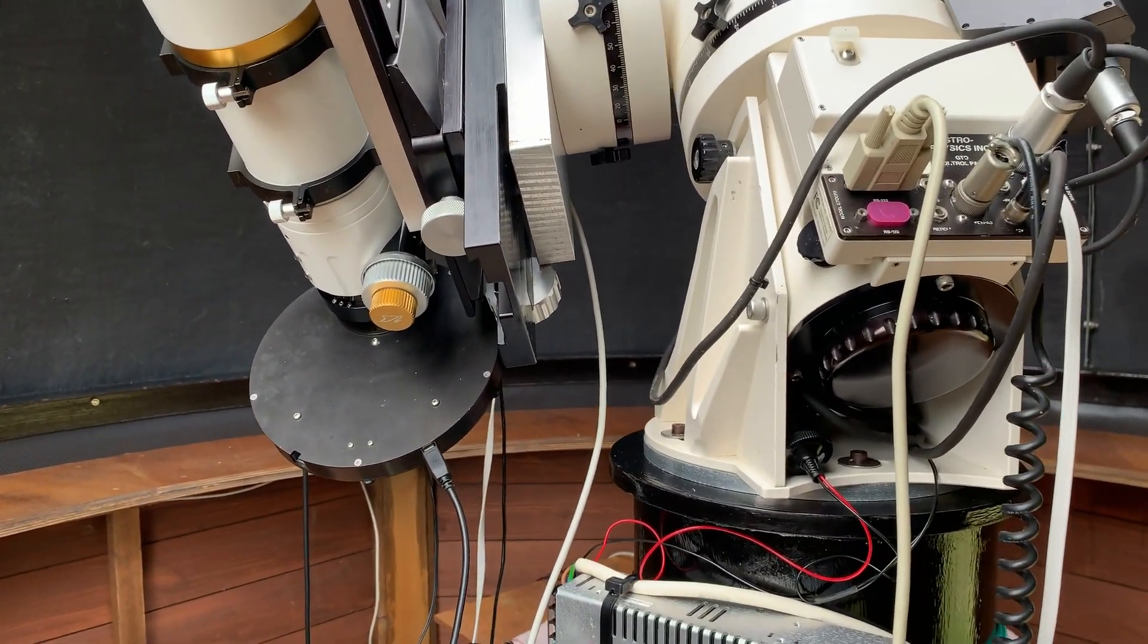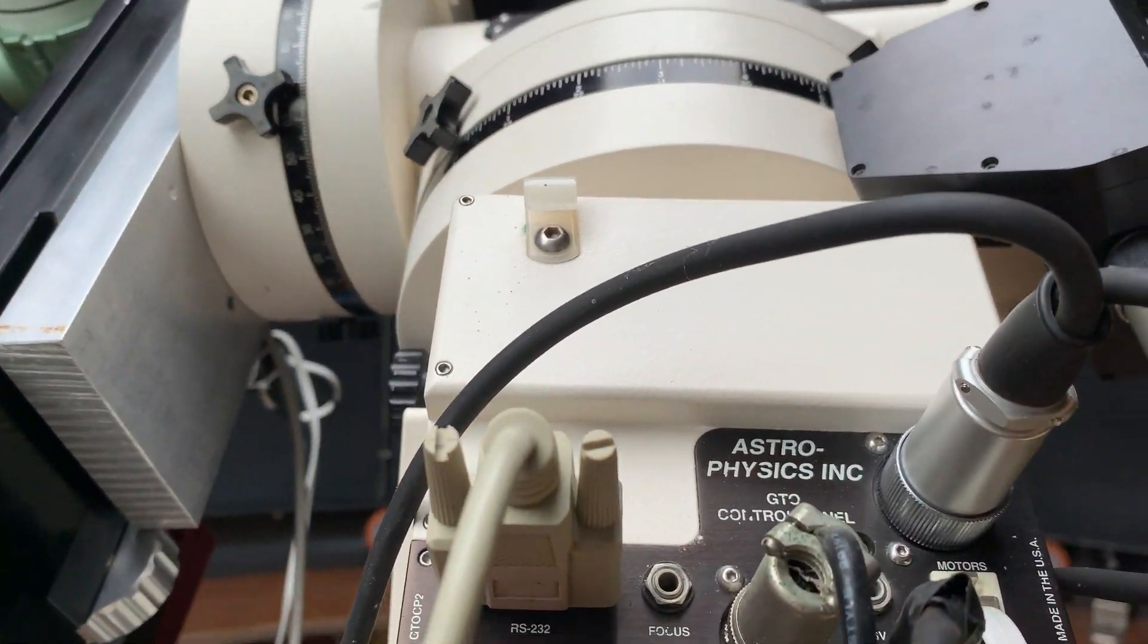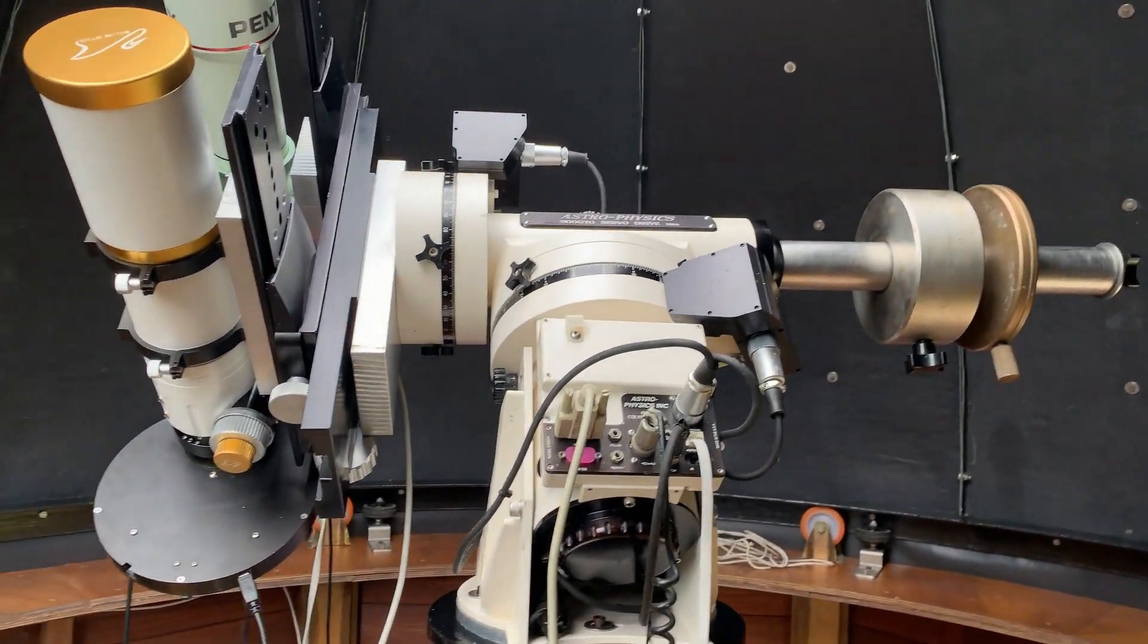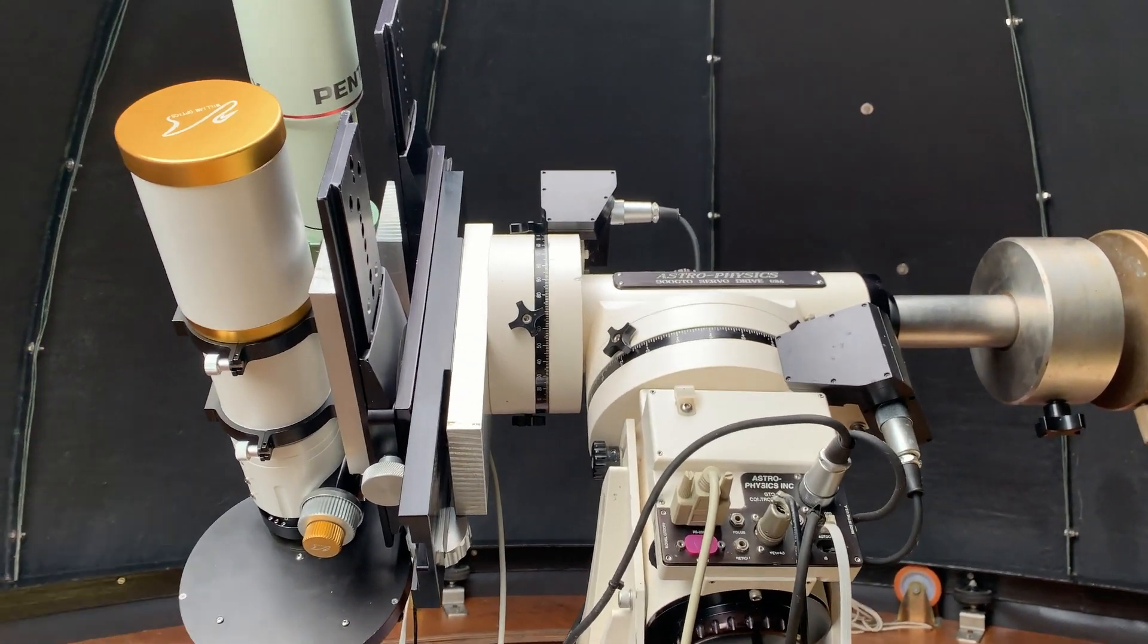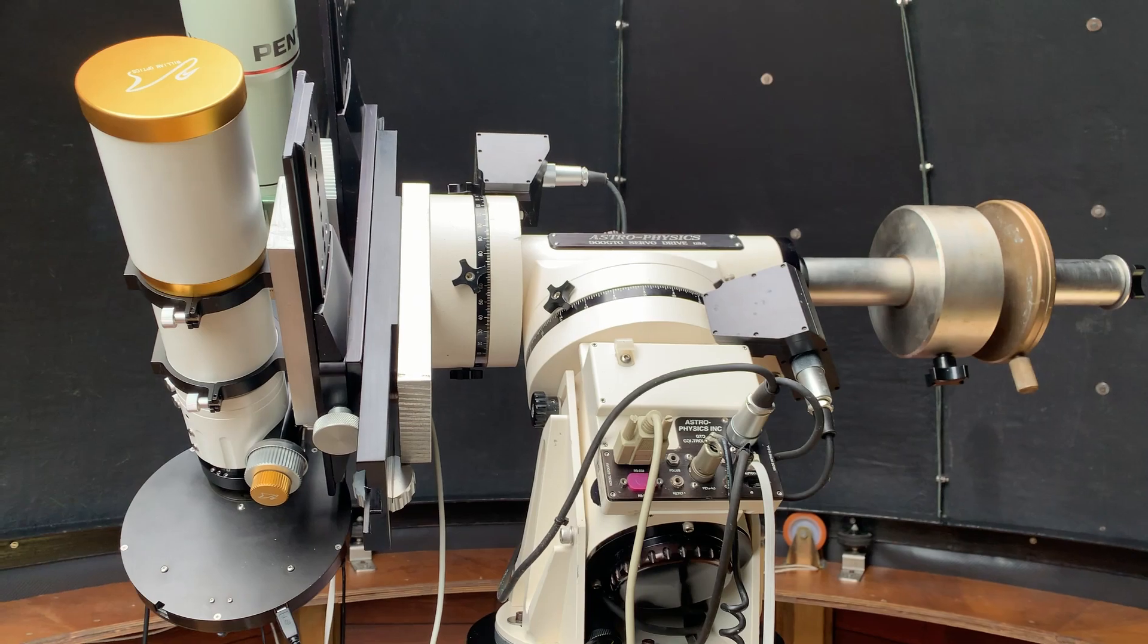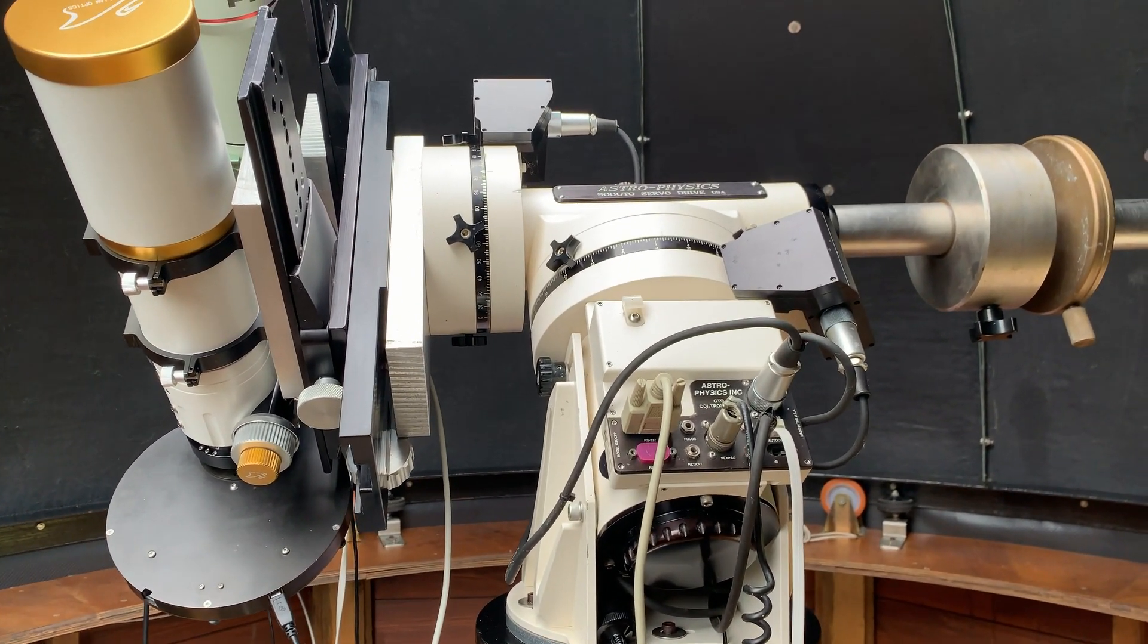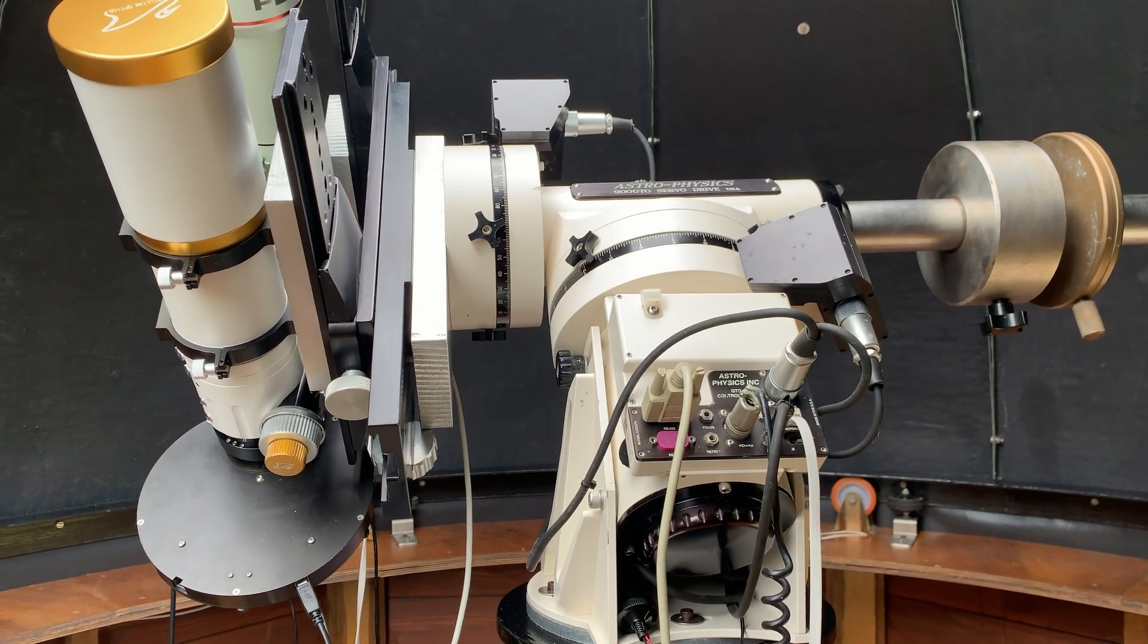This should not happen in normal circumstances. The computer should know that when it's got just a bit beyond the meridian, it should do a meridian flip and flip the whole thing round and continue imaging with the telescopes on the other side of the mount.